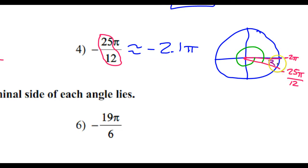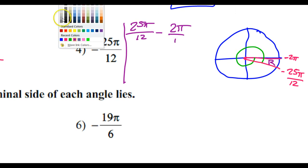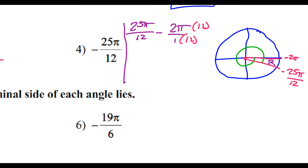I can ignore the signs because I just want the difference. So what I need to do is 25π/12 minus 2π. I'm ignoring the signs, so I'm doing 25π/12 minus 2π. And remember, this is like 2π/1. So I'm going to multiply by 12. That's going to give me 25π minus 24π over 12.